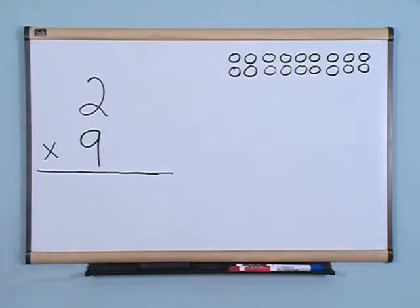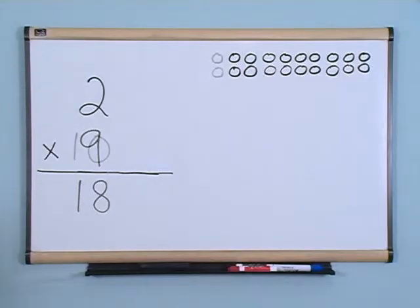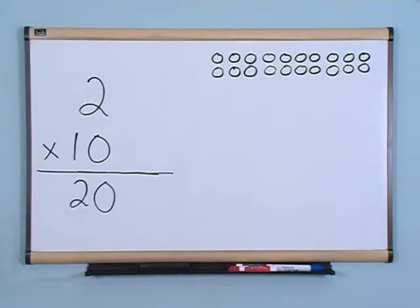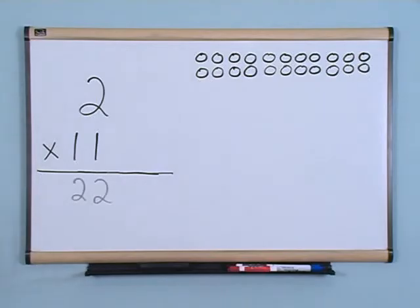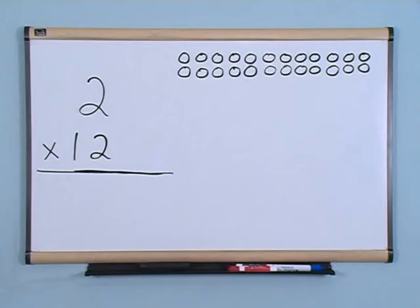Two times nine is? Eighteen. Two times nine is eighteen. 2 times 10 is 20. 2 times 11 is 22. 2 times 12 is 24.